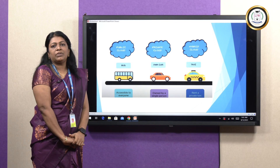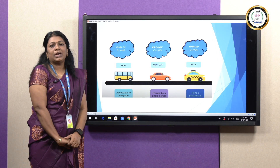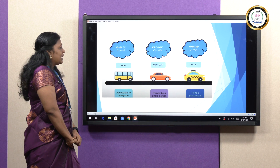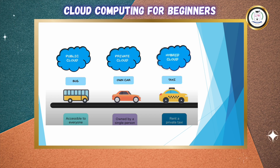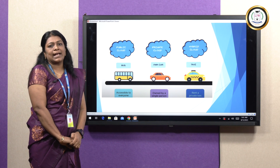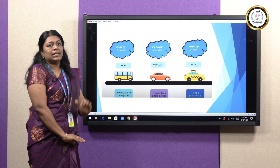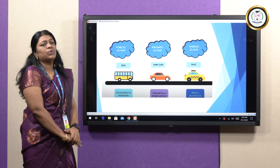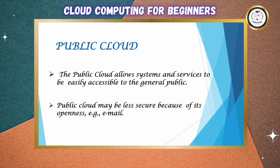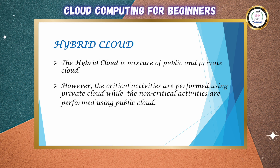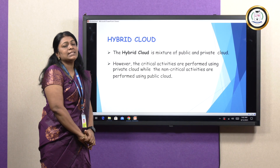Private cloud is similar to an owned car — cost is high but you are secure. Private cloud is accessible only within the organization, so it is more secure. Hybrid cloud means it is a mixture of public cloud and private cloud. A real-life example is a taxi — it is a mix of public and private. For more secure activities, you can use private cloud; where security is not needed, you can use public cloud. Public cloud allows systems and services to be accessible to the general public — for example, email. Private cloud allows systems and services within the organization and is more secure. Hybrid cloud is a mixture of public and private; critical activities are performed on private and non-critical activities on public.